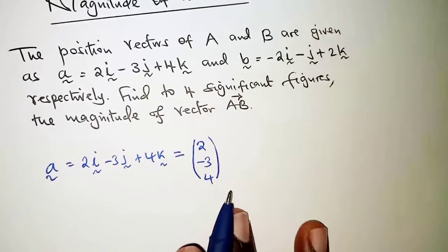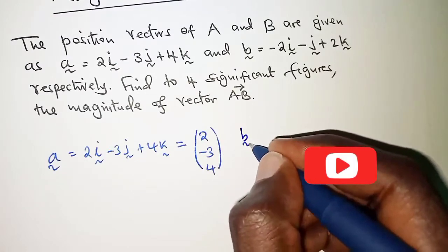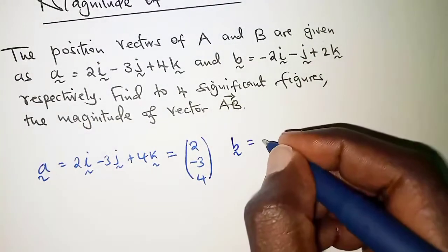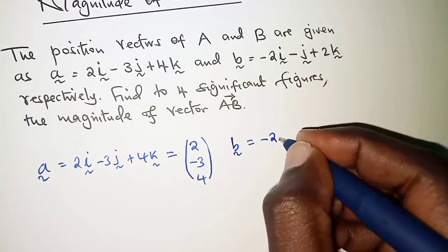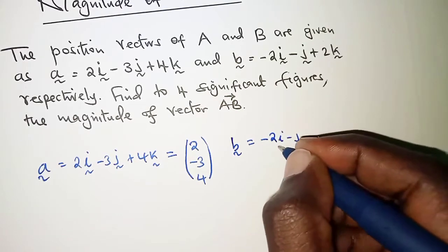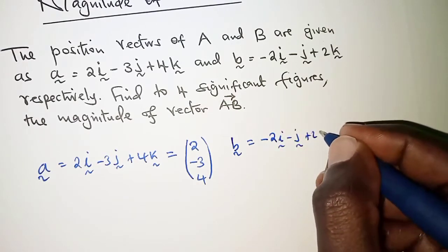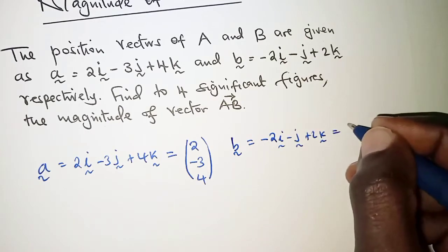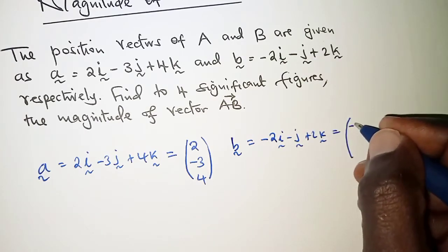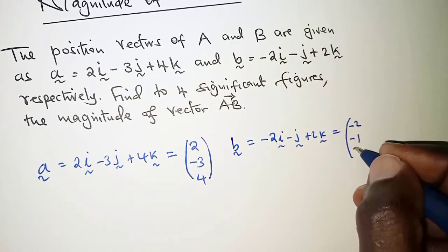For B we have -2i - j + 2k. As a column vector, this is (-2, -1, 2).